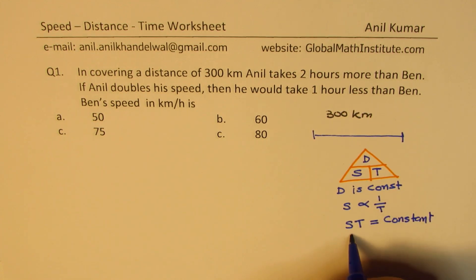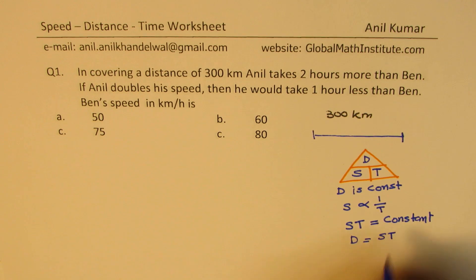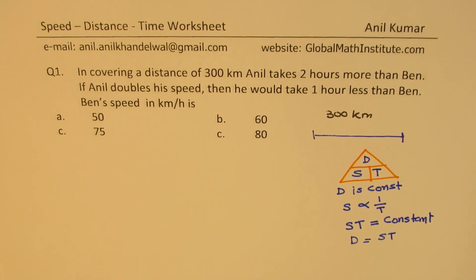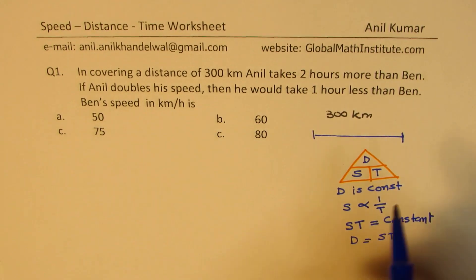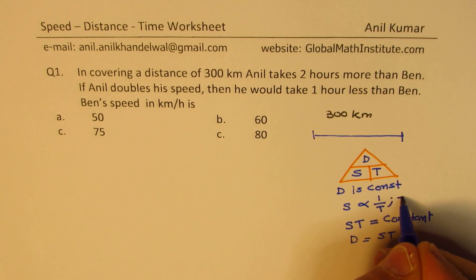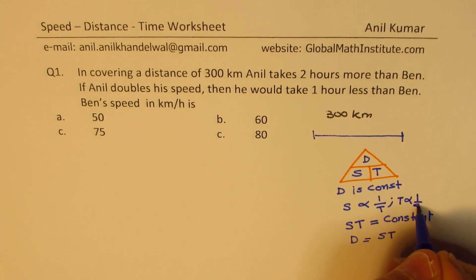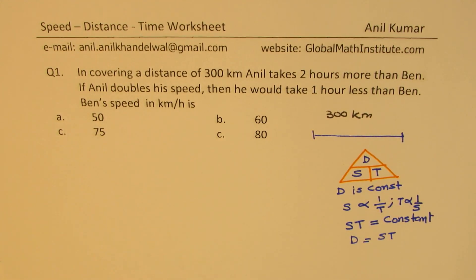Since distance equals speed into time and that is constant, we have a constant relationship between the product of speed and time. If time increases, speed decreases; if speed increases, time decreases. You could also write this as time is inversely proportional to one over speed — either way it works.